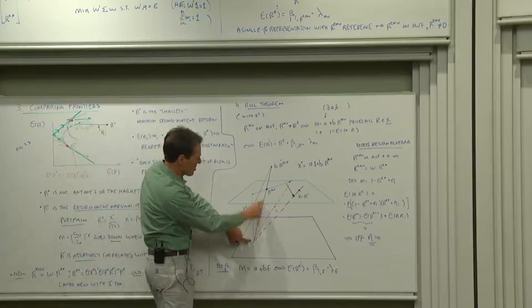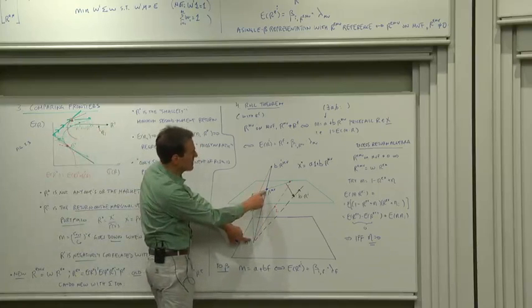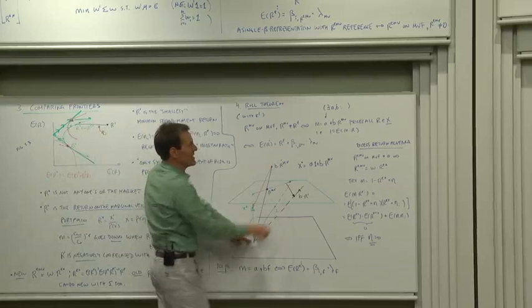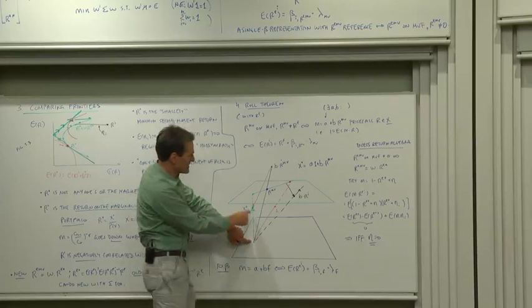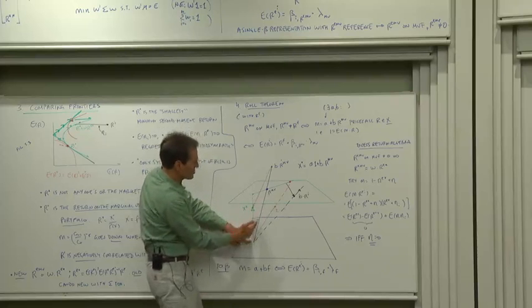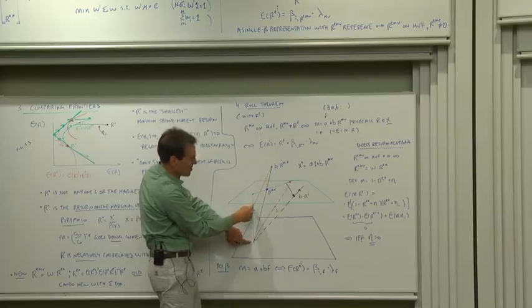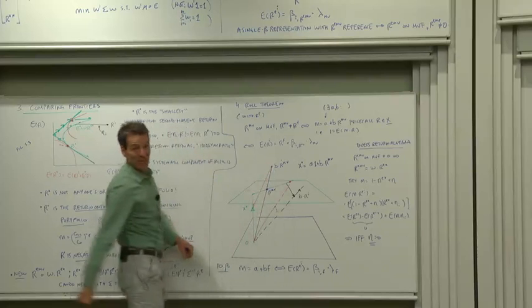Linear function means let's go to the mean variance efficient return. B times mean variance efficient return means stretching it. And then adding A means adding a certain amount of the one vector. So if I stretch out the mean variance efficient return and come back along the one vector, I get to my friend X star.